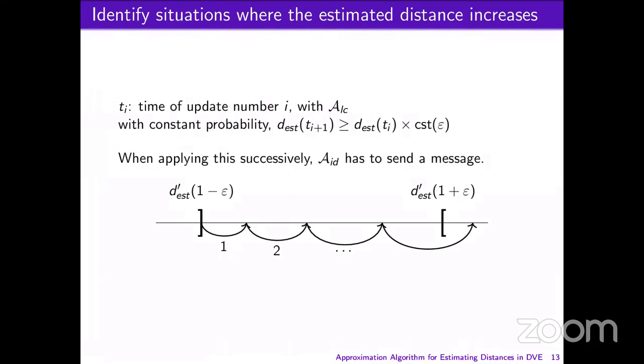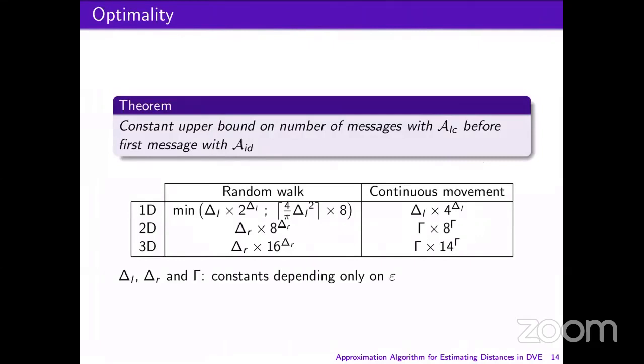We can visualize this on the interval by successive hops, corresponding to an increase in the distance between two messages. This leads us to our theorems, which state that there is an upper bound on the number of messages with LocalChange before the first message with the ideal algorithm. We look at two different random movement patterns: the first one, random walk, takes place on discrete positions, while the second one is a continuous movement. The exact values of the upper bounds are constant values depending only on epsilon.